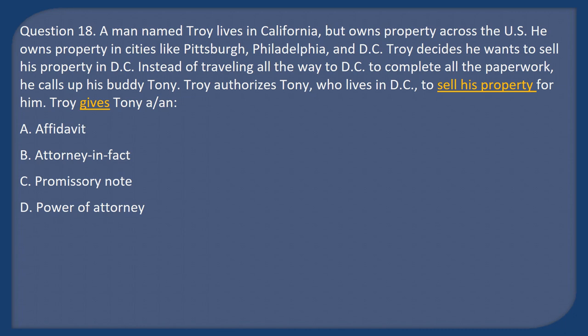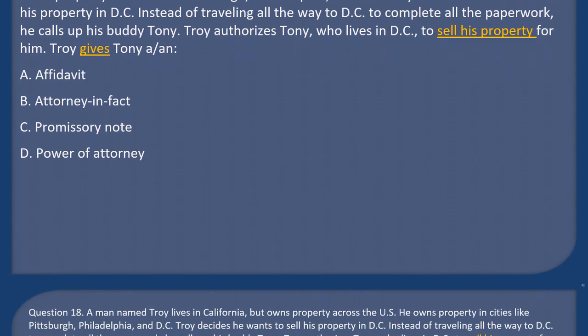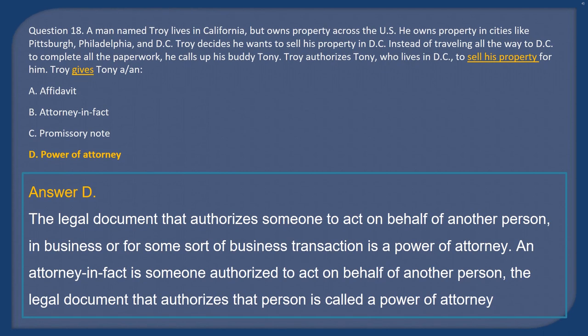Question 18: A man named Troy lives in California but owns property across the U.S., including in Pittsburgh, Philadelphia, and DC. Troy decides to sell his DC property. Instead of traveling to DC, he authorizes his friend Tony — who lives in DC — to sell the property for him. Troy gives Tony a: A) Affidavit, B) Attorney-in-fact, C) Promissory note, D) Power of attorney. Answer: D. A power of attorney is the legal document that authorizes someone to act on behalf of another in business transactions. The person authorized is called an attorney-in-fact.